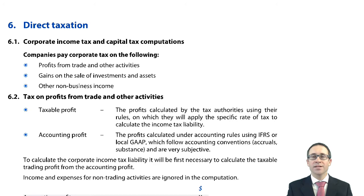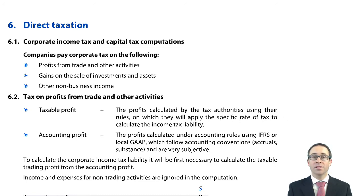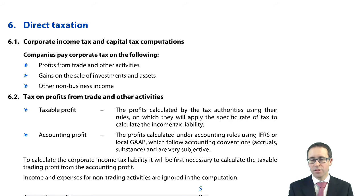We're going to look at direct tax, specifically to do with companies. We can essentially split it into two aspects. The first is the tax a company pays on its income — its profits — referred to as corporation tax in the UK, or income tax internationally. We also need to look at it from a capital tax perspective, whereby a company generates a gain on the disposal of an asset and how that gain is subsequently taxed. The syllabus focuses on direct income tax and direct capital tax for a company.